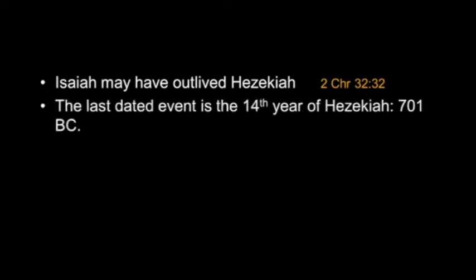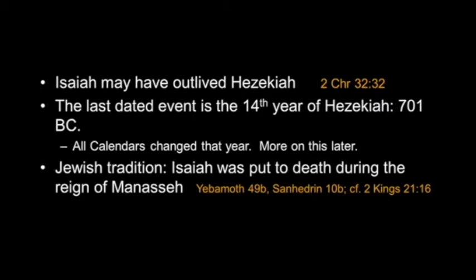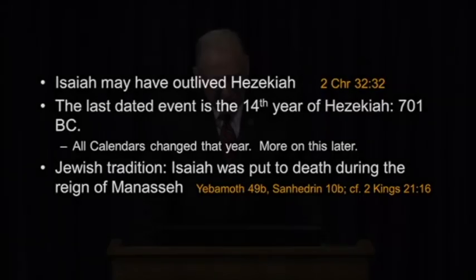Isaiah may have outlived Hezekiah, strangely enough. It was Manasseh that ended it. The last dated event is the 14th year of Hezekiah in year 701, and that's when all calendars changed for some reason. There's a Jewish tradition that he was put to death during the reign of Manasseh, which is in the Jewish documentation. And sawed in half is what Paul suggests in the Epistle of Hebrews.